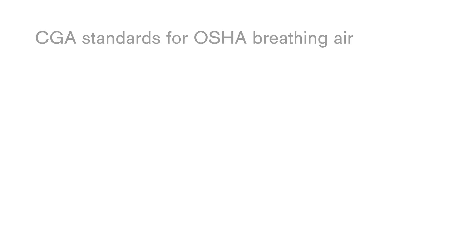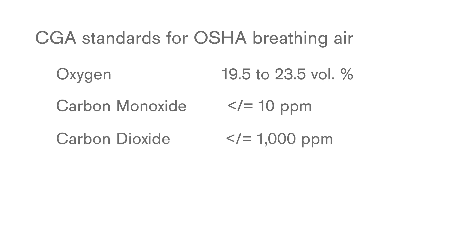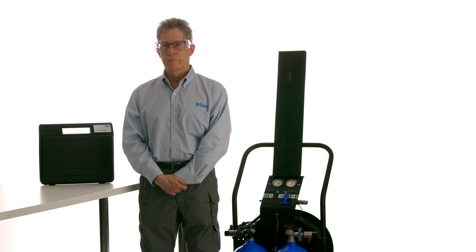The CGA standard specifies oxygen to be 19.5 to 23.5 volume percent, carbon monoxide less than or equal to 10 ppm, carbon dioxide less than or equal to 1000 ppm, condensed oil less than or equal to 5 mg per cubic meter, and water content less than or equal to 54 mg per cubic meter for OSHA breathing air. Other standards vary slightly.